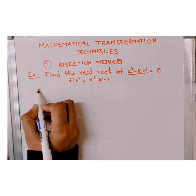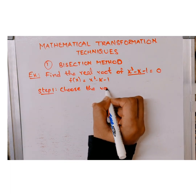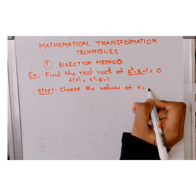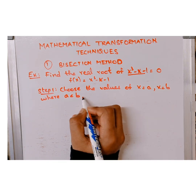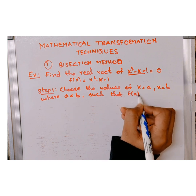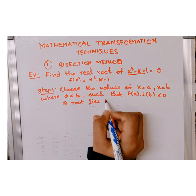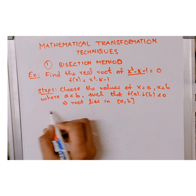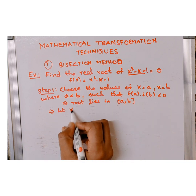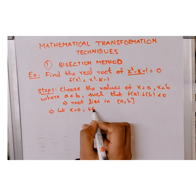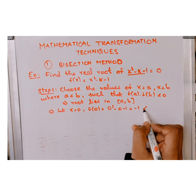I'll explain with steps. Step one: choose values x = a and x = b where a < b, such that f(a) · f(b) < 0 — then the root lies in (a, b). Coming to our solution: consider x = 0, then f(0) = 0³ - 0 - 1 = -1, which is less than 0.